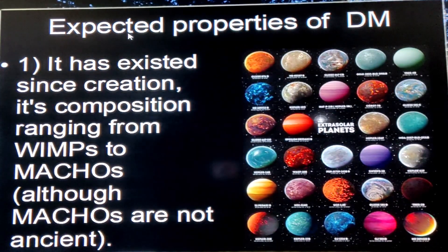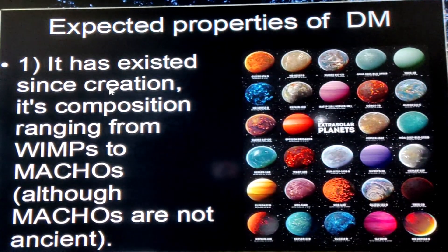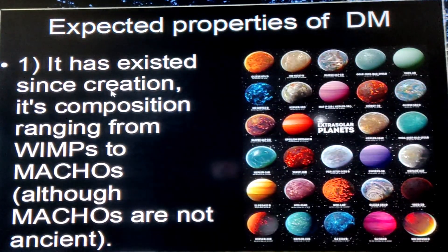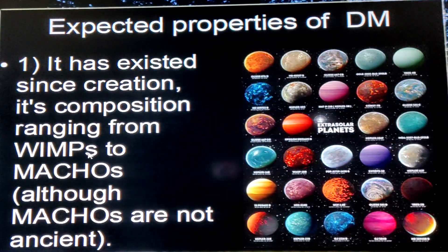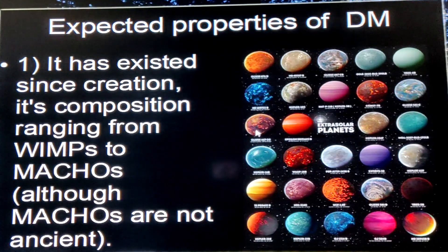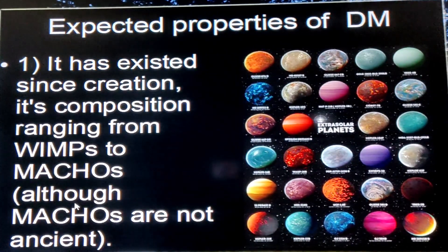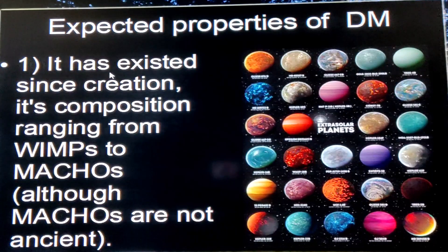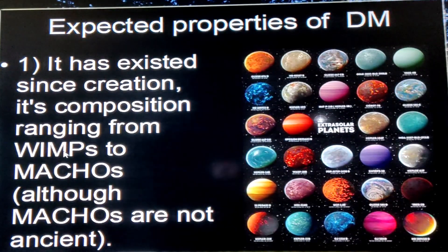This dark matter has certain properties. Number one: it has existed since the creation of the universe, or shortly thereafter. Its composition ranges from WIMPs — Weakly Interacting Massive Particles — to MACHOs, which is basically anything large like a planet or black hole that doesn't emit light. If MACHOs are real, they couldn't have existed that far back, which leaves WIMPs as the only possibility.